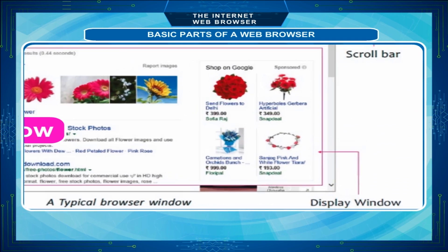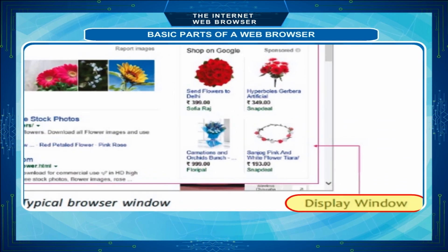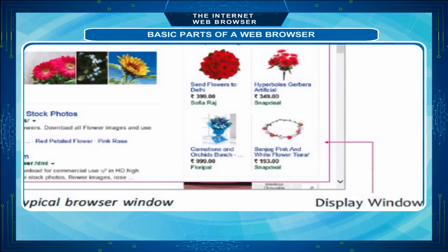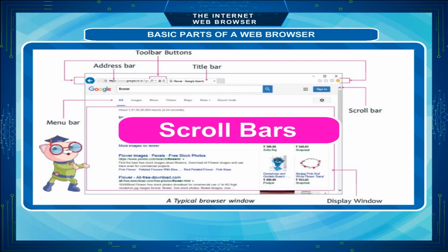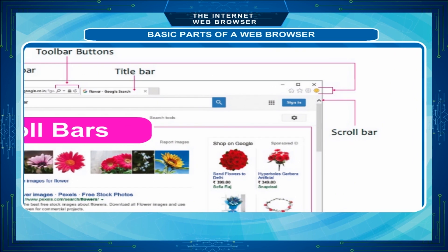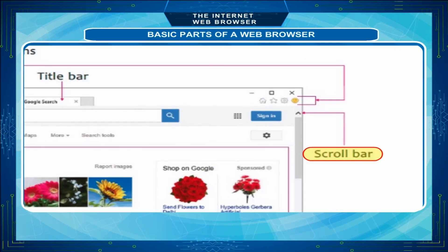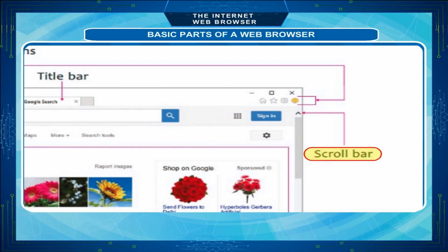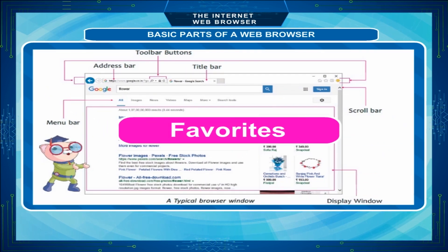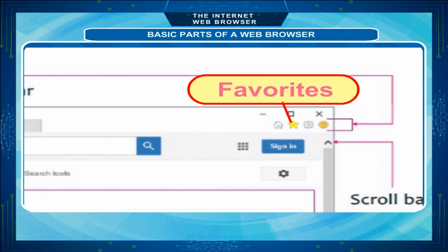Display Window: The display window is the frame through which you see the website contents. Scroll Bars: They are navigational or directional aids to scroll down or up, or left or right, to read something on the web page. Favorites: It lists the favorite sites.